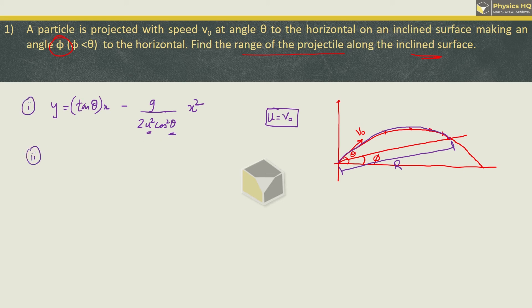Second thing, what we can see here is that the range is r. We can resolve it in two components. The horizontal component will be along x-axis. This will be r cos phi because this angle is phi. And the vertical component will be r sin phi.